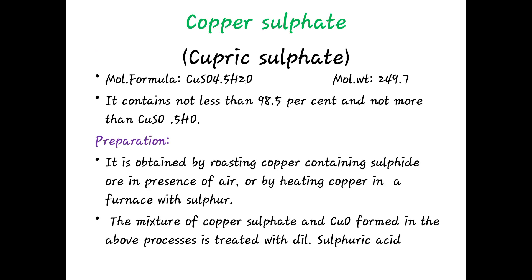The second example is copper sulfate, also known as cupric sulfate. Its molecular formula is CuSO4·5H2O, with a molecular weight of 214.7. It contains not less than 98.5% of copper sulfate (CuSO4·5H2O).